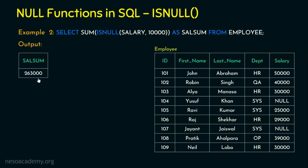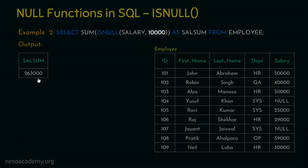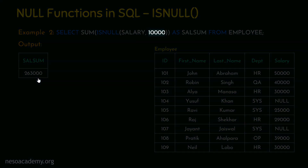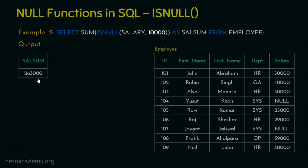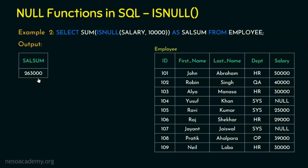Here is a question: we know null is neither blank nor zero, but what if we want to consider null to be zero? In example 2, we used 10,000 as the replacement for null. How would we treat null as zero? It's simple — instead of 10,000, just replace it with zero, so that your summation considers null as zero. We are done with the ISNULL function.